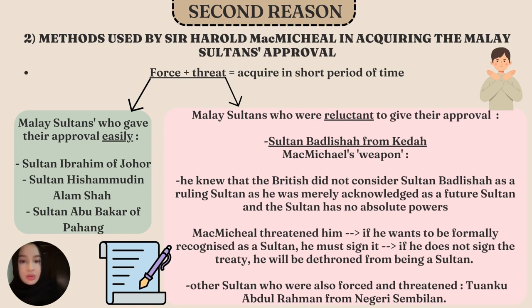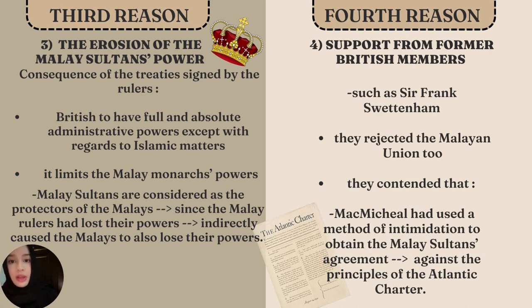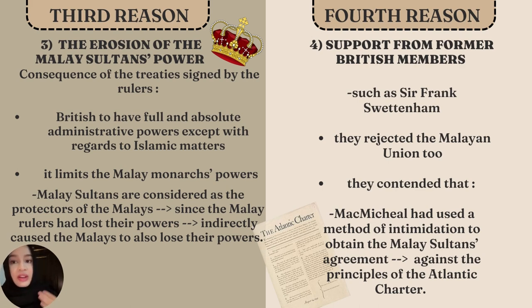The third reason was that MacMichael's methods caused the erosion of the Malay sultans' power. The treaty signed gave the British full and absolute administrative powers except on Islamic matters, and limited the Malay monarchs' political and moral authority. Since Malay sultans are the protectors of the Malays, their loss of power indirectly caused the Malays to also lose their powers, resulting in their furious rejection of the Malayan Union. It is also notable that several former British members such as Sir Frank Swettenham supported the Malay opposition, rejecting the Malayan Union because MacMichael's intimidation methods went against the principles of the Atlantic Charter.